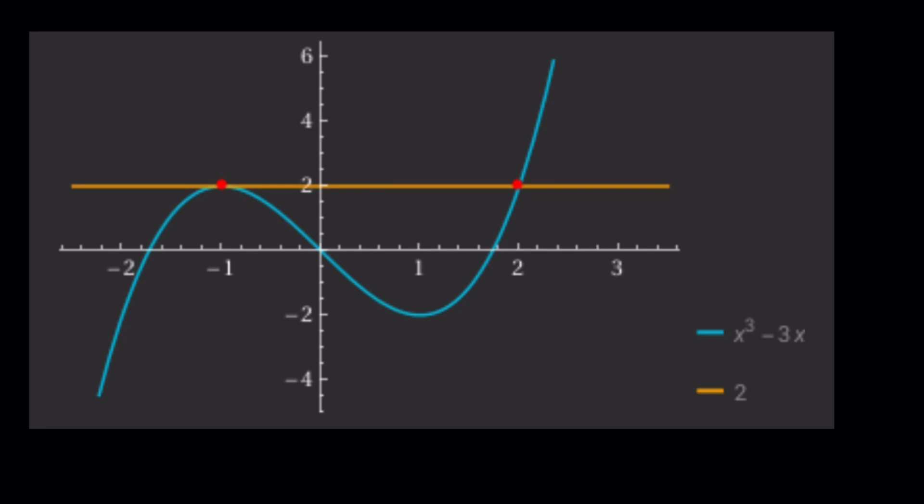What is that supposed to mean? It means this function is not always increasing or not always decreasing, which means it's not one-to-one or injective. And what happens when a function is not one-to-one?